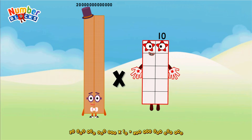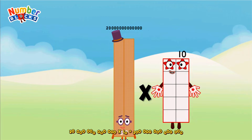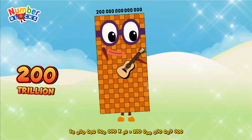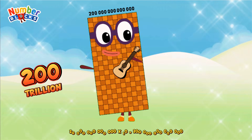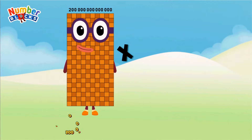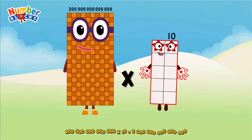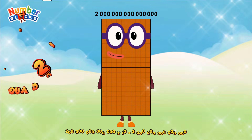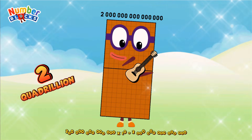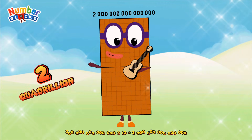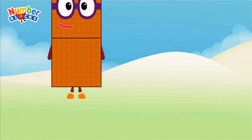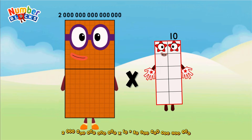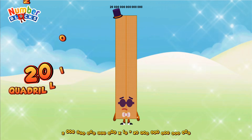Twenty trillion, multiplied by ten, equals two quadrillion. Two quadrillion, multiplied by ten, equals twenty quadrillion.